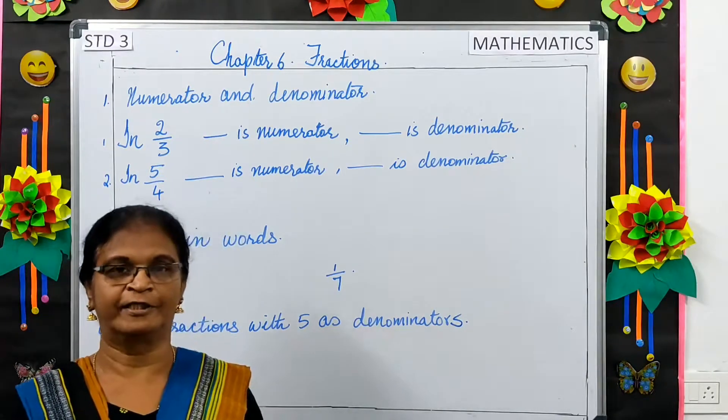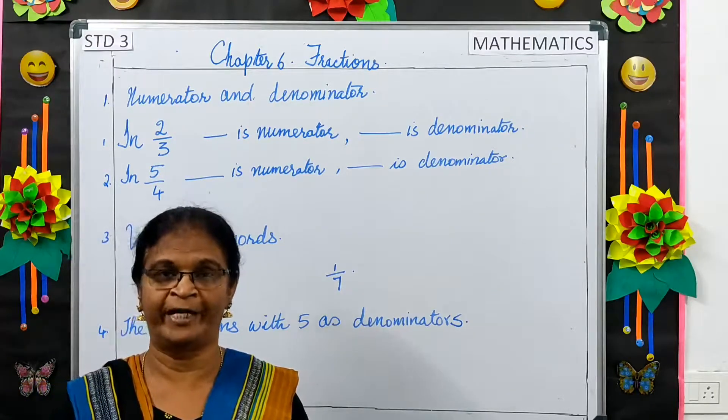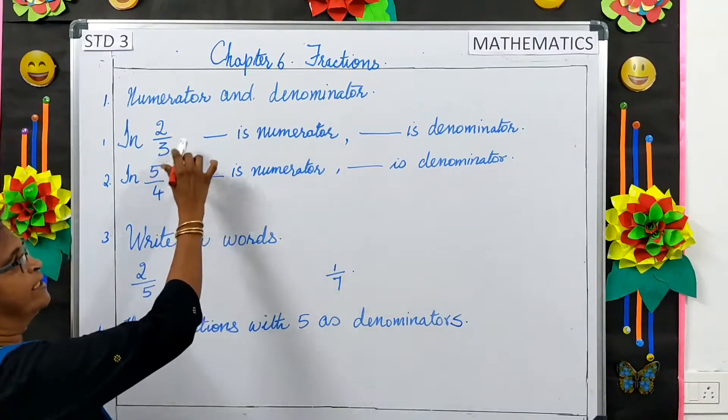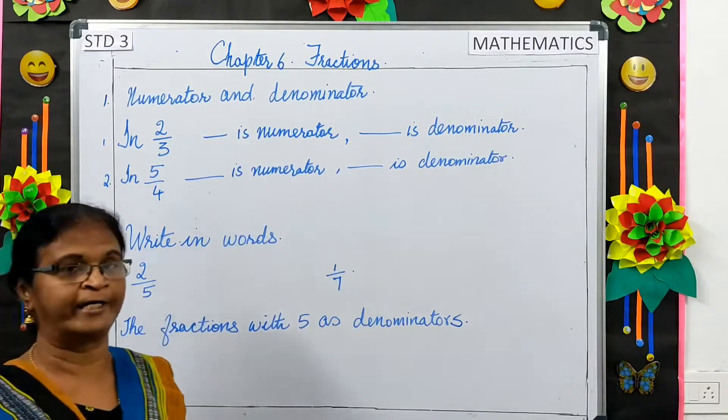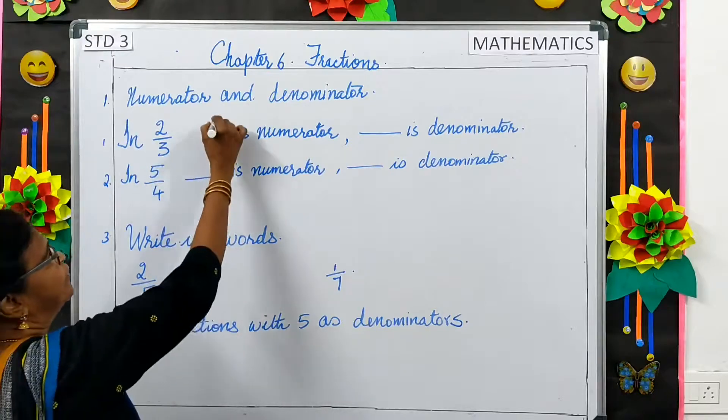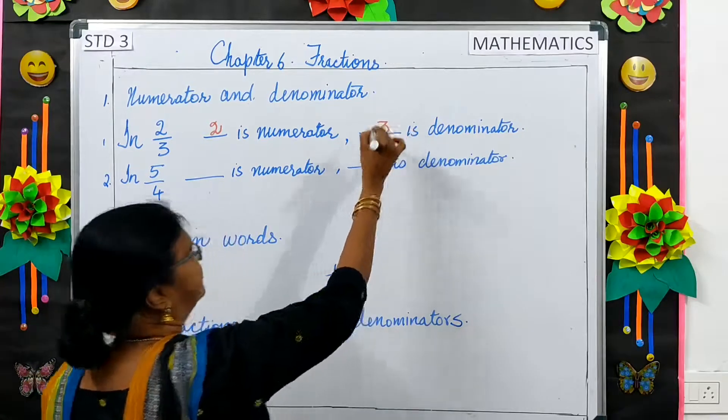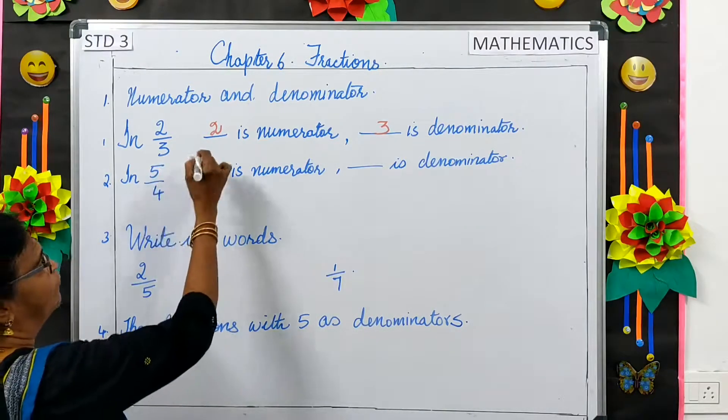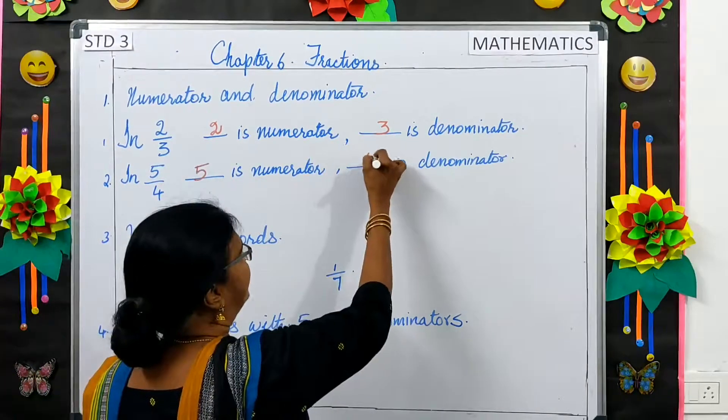First, let us learn what is numerator and denominator. The number above the line in a fraction is numerator and the number below the line is denominator. In 2 by 3, 2 is numerator and 3 is denominator. The same way, in 5 by 4, 5 is numerator and 4 is denominator.